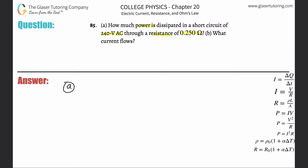So for letter A, this is relatively straightforward. We have to find a formula that relates power, voltage, and resistance. And the formula is power equals the square of the voltage divided by the resistance.